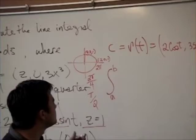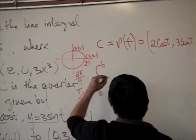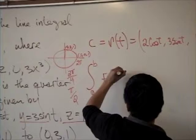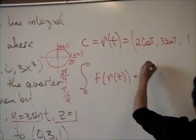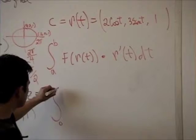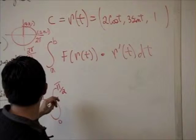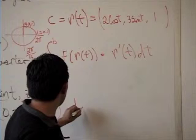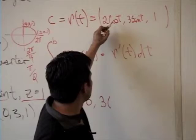Knowing that, you plug this r(t) into your vector field, which is going to give you F of r of t, and you dot it by the derivative of your parameterization with respect to t. So we plug in everything we have, from zero to pi over two, F of that, which is going to give you z is one, so it's going to be one, zero, three times the cube of x, which is two cosine of t.